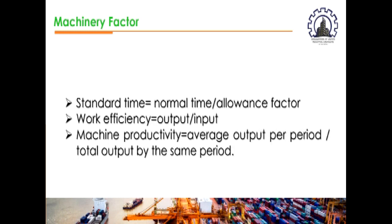There are formulas we need to know to determine how many machines will be used or what kind of machines are best for the operation. First, standard time equals normal time divided by the allowance factor. Second, work efficiency equals output over input. Lastly, machine productivity equals average output per period over total output for the same period. This is important because not all machines make production fast or produce top quality products — putting machines carelessly in production can actually make it slower.